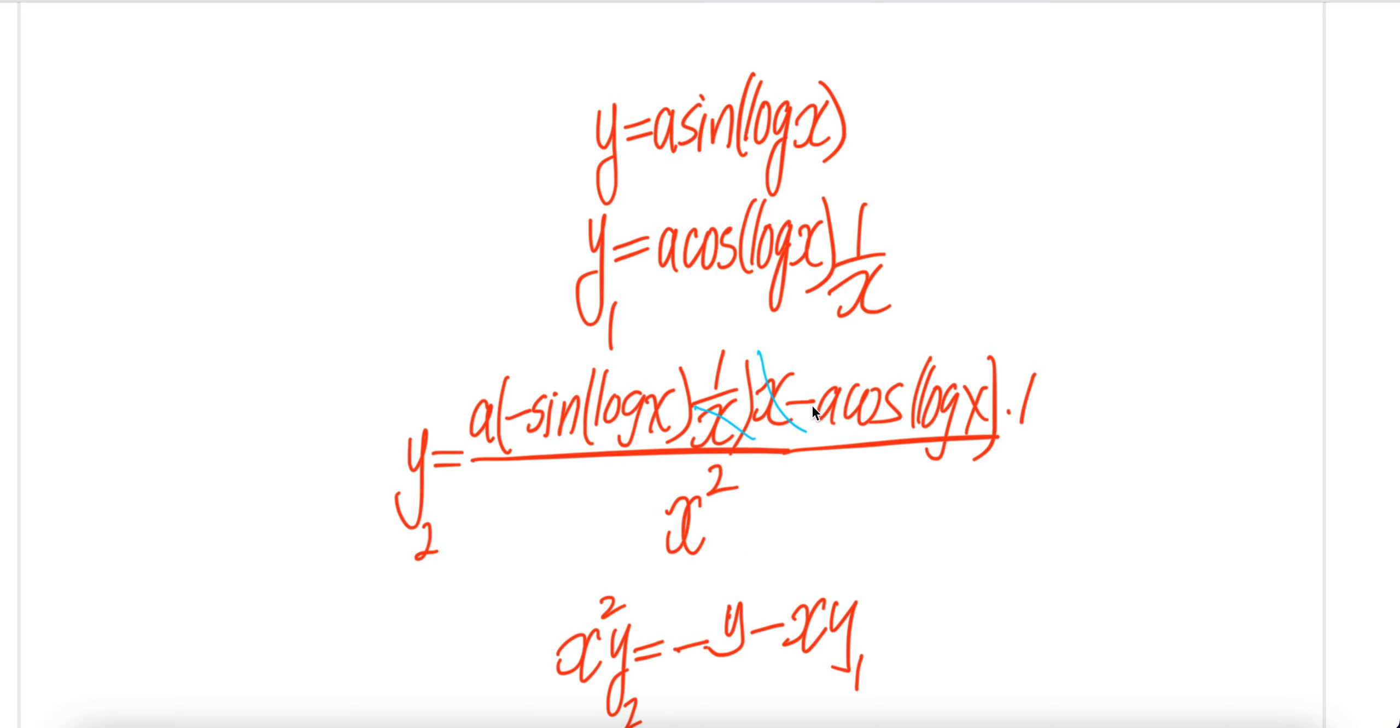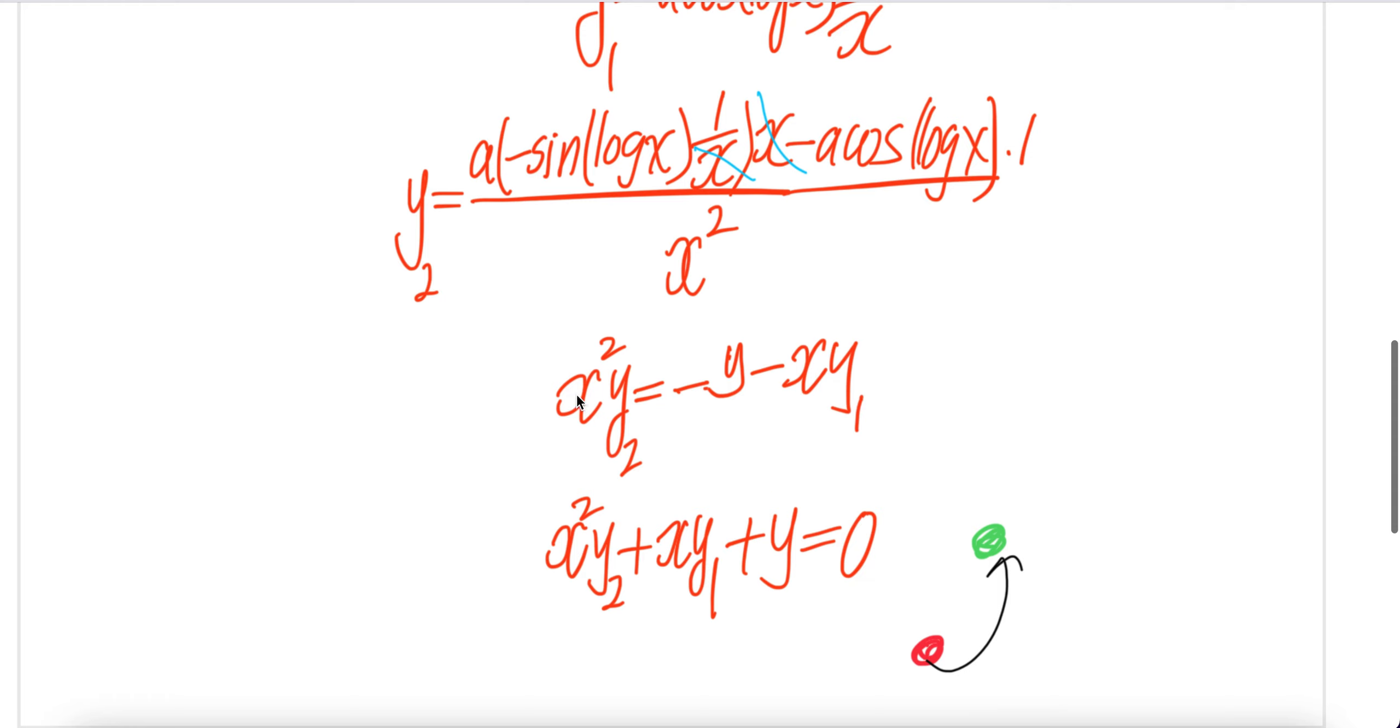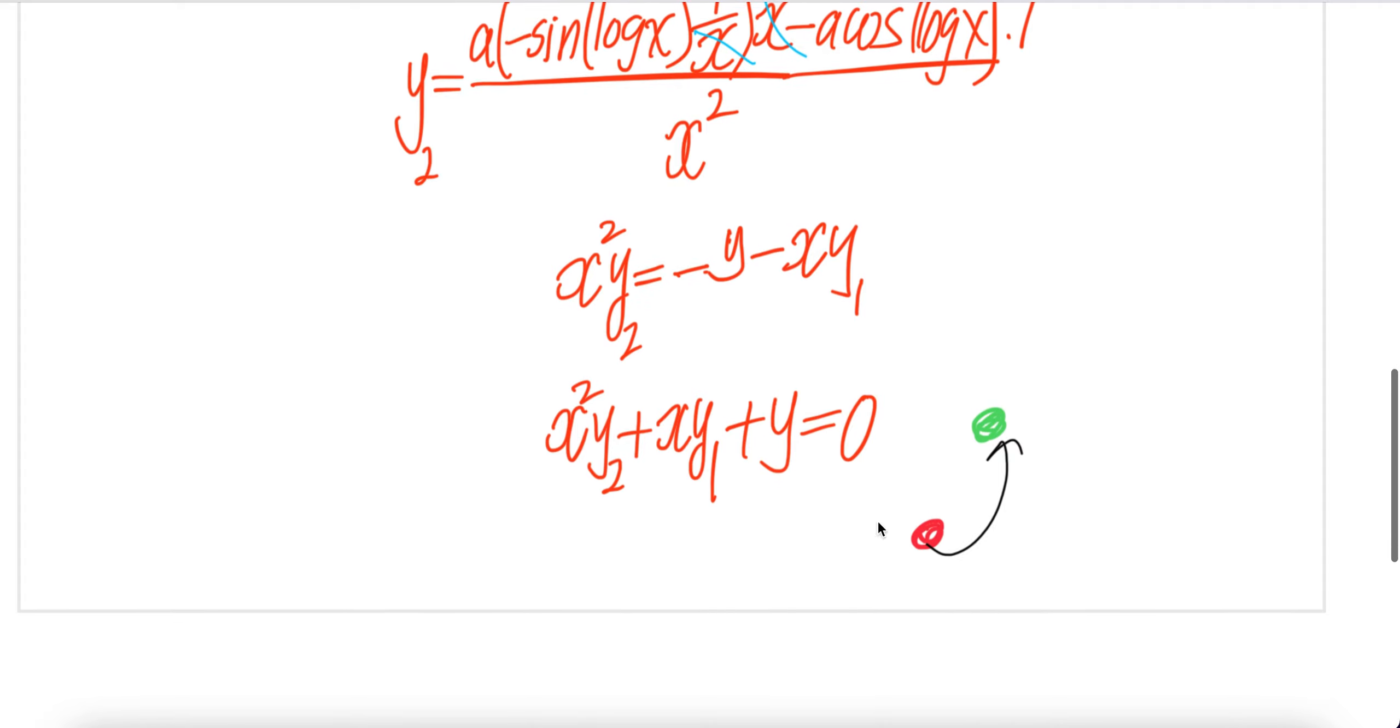And here you get minus a cos(log x), which is x times y₁. Move this to the left-hand side, you get x²y₂ + xy₁ + y = 0. Done.